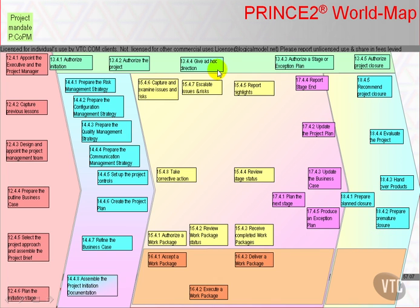So here are the 40 PRINCE2 activity names as formally given in the manual. Notice that they're in lower case, except where they name a management product — in which case the management product is capitalised — or they include the proper noun of a name, which is also capitalised. Otherwise, they start with a capital and the rest is lower case. Notice also that the official manual uses Z's rather than S's for the names, though that's not something we really have to worry about in the exam.